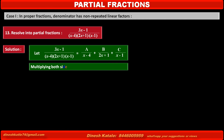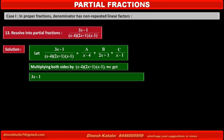Now, to remove the denominators of each term, multiplying both sides by (x minus 4)(2x plus 1)(x minus 1), which is the LCM, we get: 3x minus 1 equals A(2x plus 1)(x minus 1) plus B(x minus 4)(x minus 1) plus C(2x plus 1)(x minus 4). Consider this as equation 1.